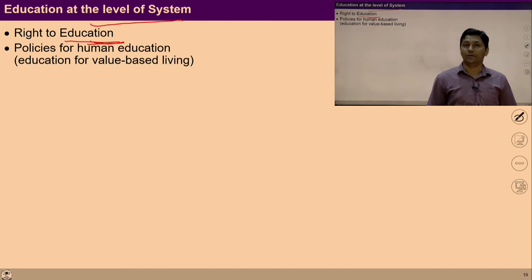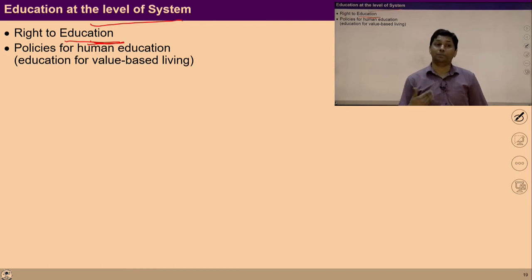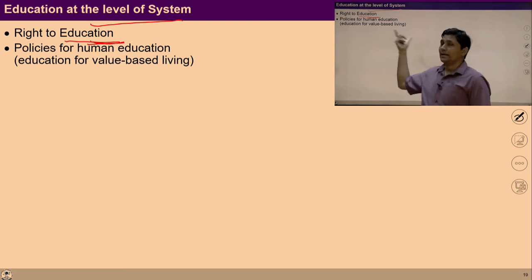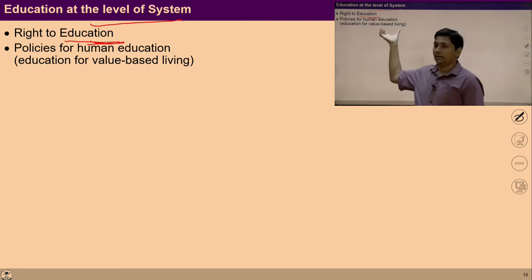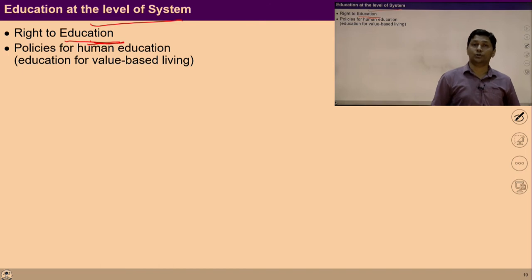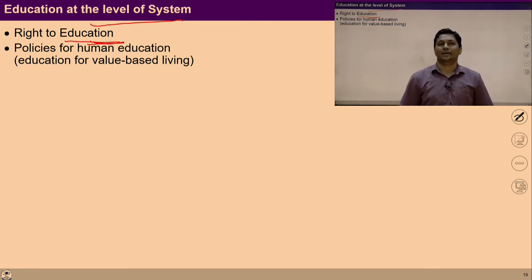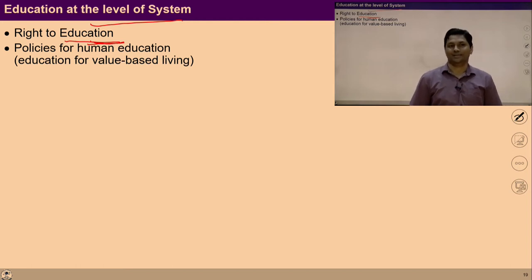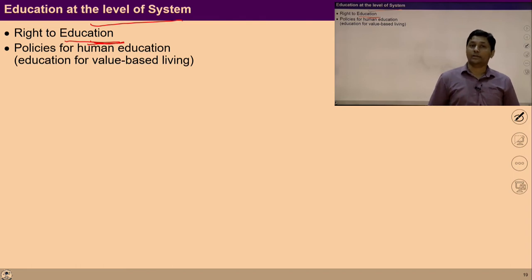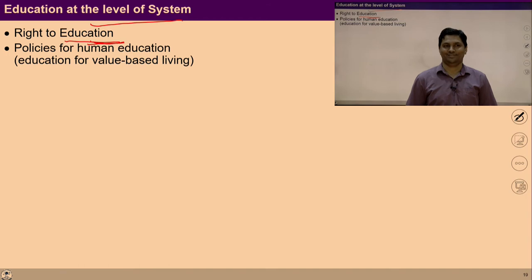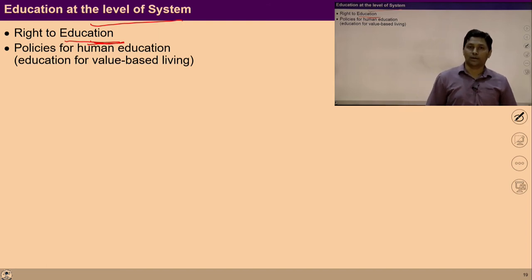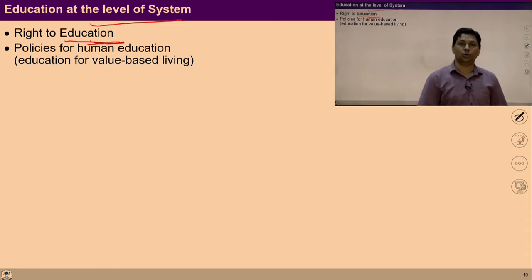There should be an opportunity for every person to have favorable conditions and means for proper education. Once the content is right and aligned to reality, the next step is to ensure all the means so that everyone gets the opportunity to go to school and get the education — this has to be ensured at the level of policy. We must first ensure content and process for human education, then work to remove all obstacles that prevent students from accessing education.